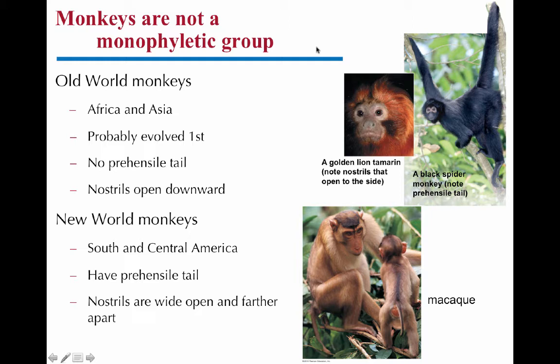There are two main types of monkeys: old world monkeys and new world monkeys. The old world ones live in Africa and Asia and do not have a prehensile tail. The macaque is an example of an old world monkey — you can see the little tail, it's not a grasping tail. They have downward-facing nostrils and they probably evolved first.